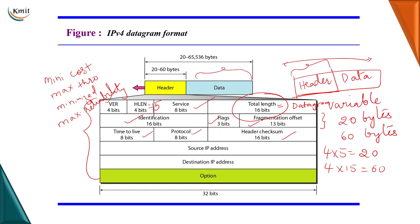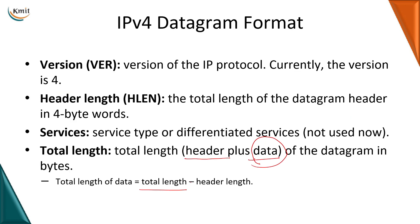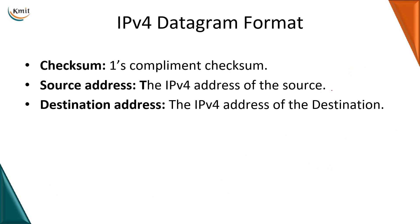The header checksum field computes the checksum for the entire header to provide error detection. We calculate the checksum by adding all the bits and taking the one's complement, then repeat at the receiver side to check for errors. Then come the source IP address and destination IP address fields, specifying the IPv4 addresses of the source and destination.